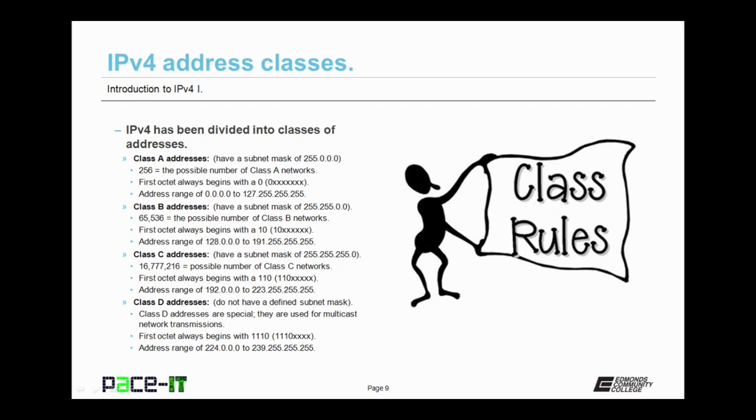This gives us a possible address range of 128.0.0.0 up to 191.255.255.255. Then there are class C addresses. These always have a subnet mask of 255.255.255.0. This gives us over 16 million possible class C networks. The first octet on the left always begins with a one one zero.